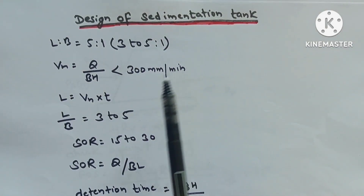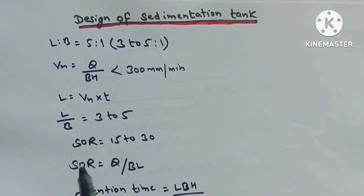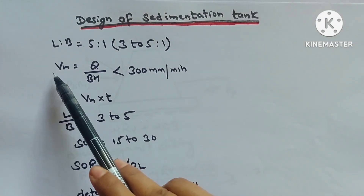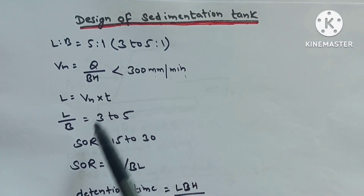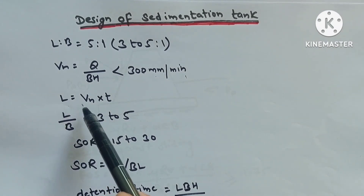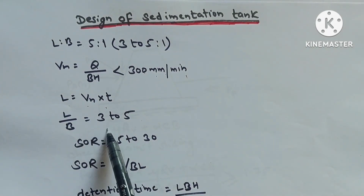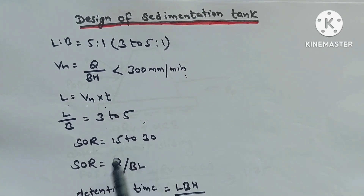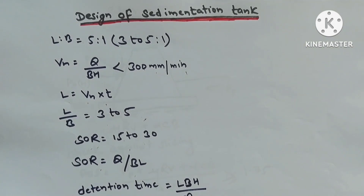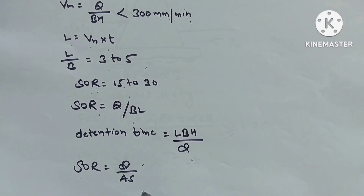Sedimentation tank design: L:B ratio = 3:1 to 5:1. Horizontal velocity VH = Q/(BH) < 300 mm/min. Length L = VH × T. L/B = 3 to 5. Surface overflow rate SOR = 15 to 30, SOR = Q/(BL). Detention time = LBH/Q. SOR = Q/AS.